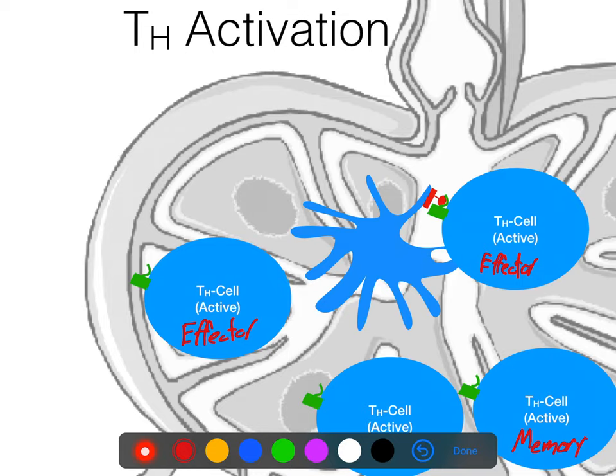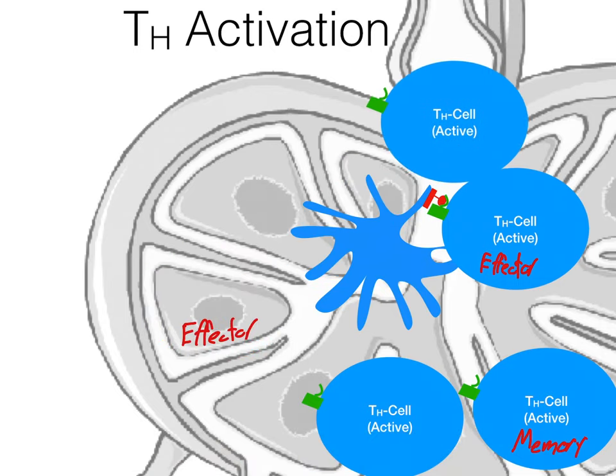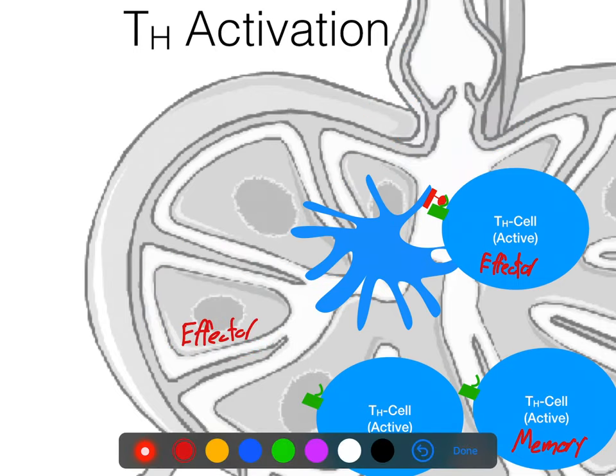So the next thing that's going to happen is you've got all of these effector cells. They're going to spread out to the rest of the body, so they're going to take this signal. They're relaying a message: Hey, dendritic cell told me that this thingy that he showed me from this virus—yeah, it's bad, we should kill it.